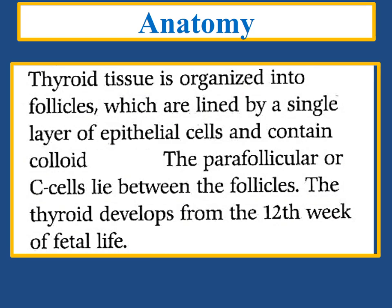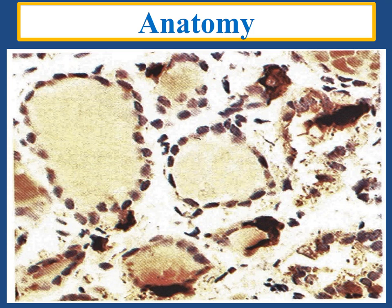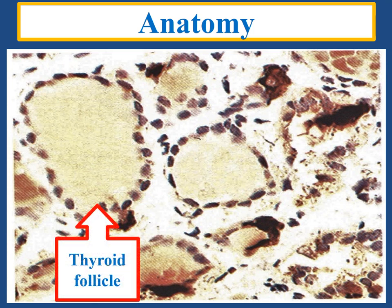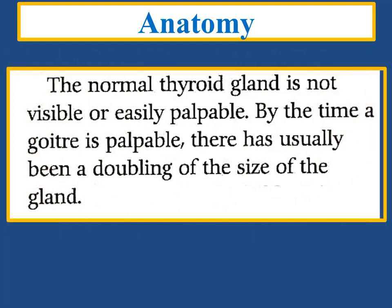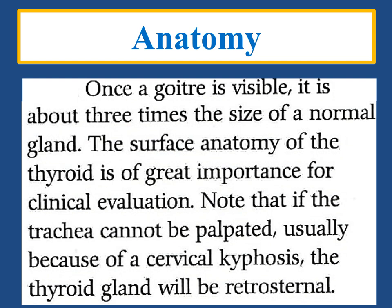The thyroid develops from 12 weeks of fetal life. Here we can see the thyroid follicles and C-cells in the parafollicular space. The normal thyroid gland is not visible or easily palpable. By the time a goiter is palpable, there has usually been a doubling of the size of the gland. Once a goiter is visible, it is about three times the size of a normal gland. The surface anatomy of the thyroid gland is of great importance for clinical evaluation. Note that if the trachea cannot be palpated, usually because of cervical kyphosis, the thyroid gland will be retrosternal.